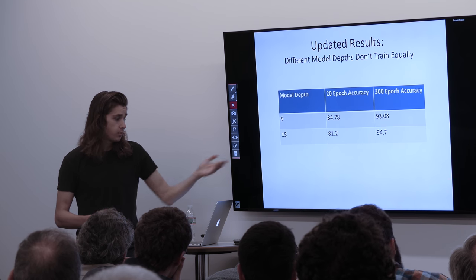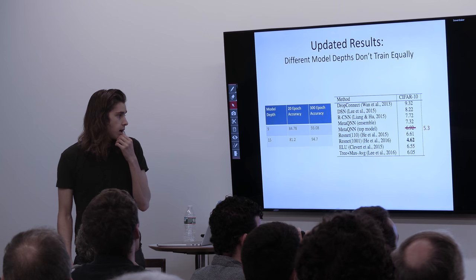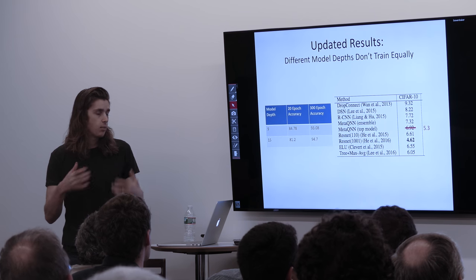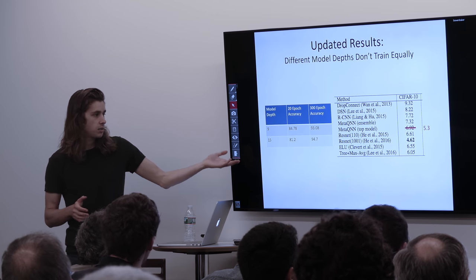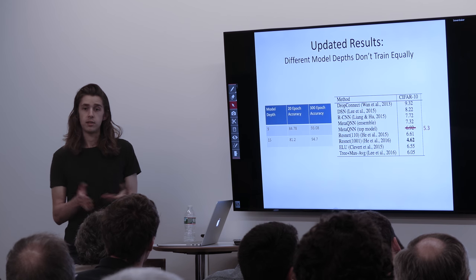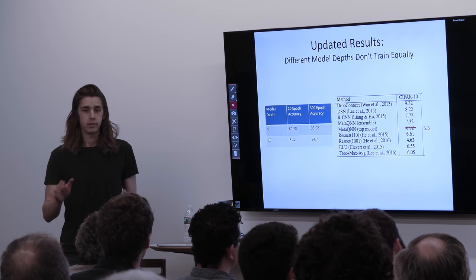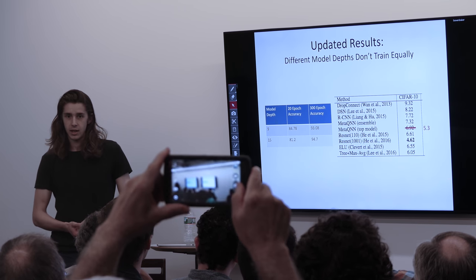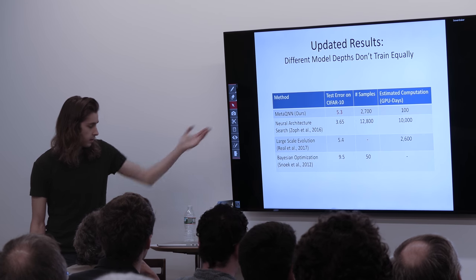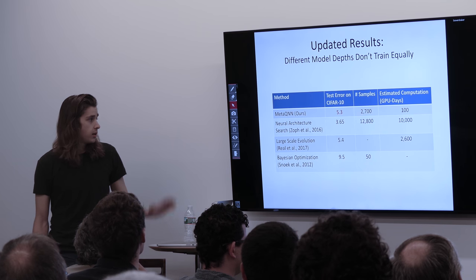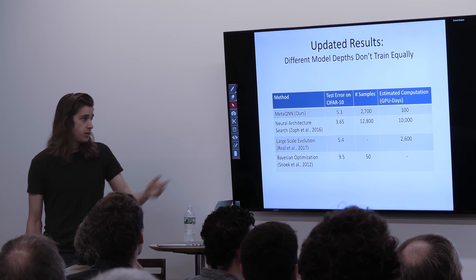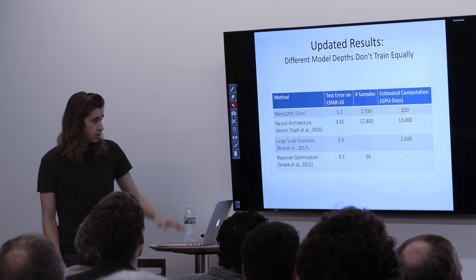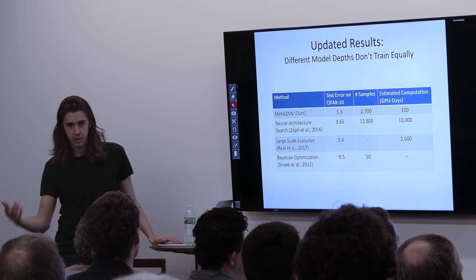With the updated numbers, we get 5.3% error in 100 GPU days, which beats the evolutionary algorithm that takes 2,600 GPU days. The architecture search from Google is closer but still uses far more computation. This is all with very simple convolutions, simple pooling layers, nothing fancy — basically 2014 deep learning. With 5x fewer GPU days than the evolutionary approach at competitive error rates, it's promising.